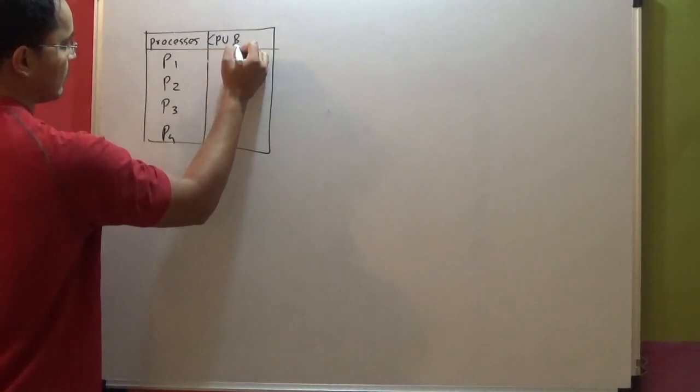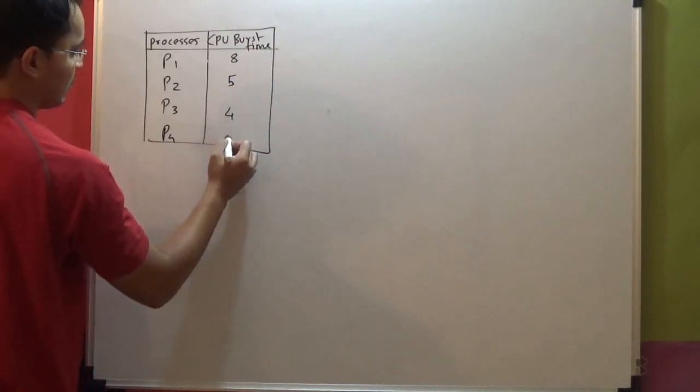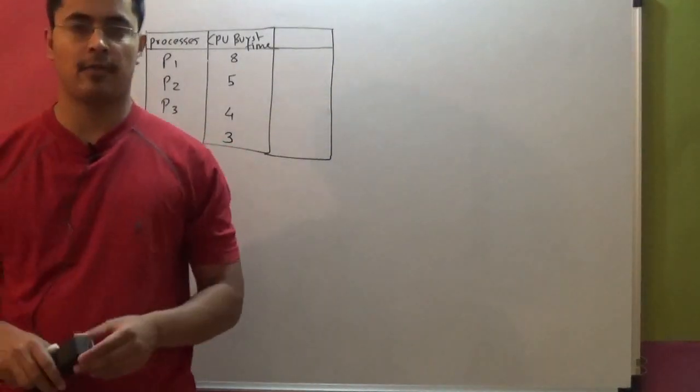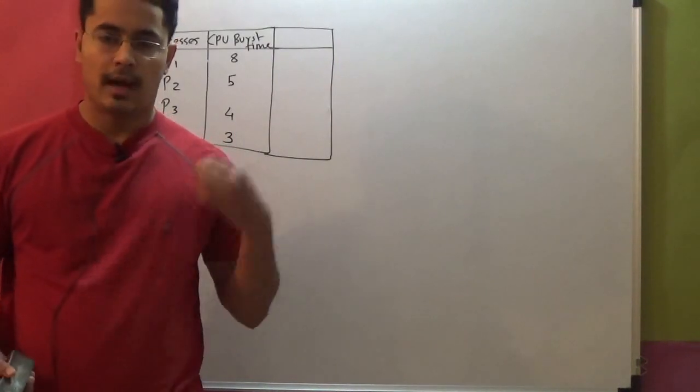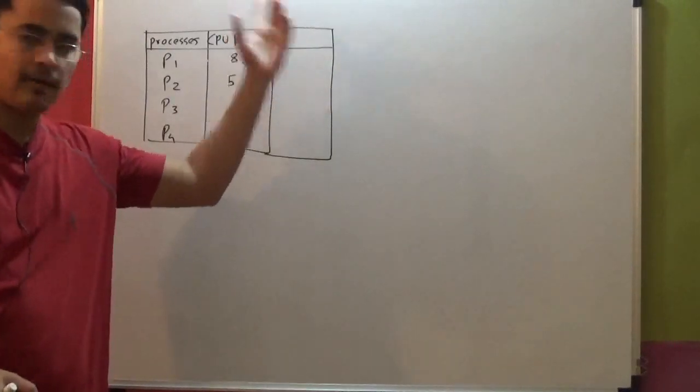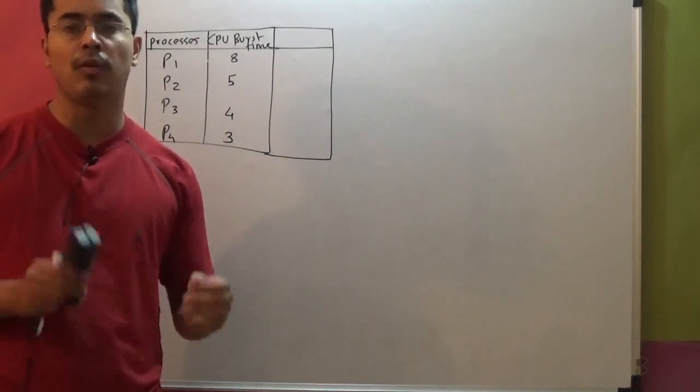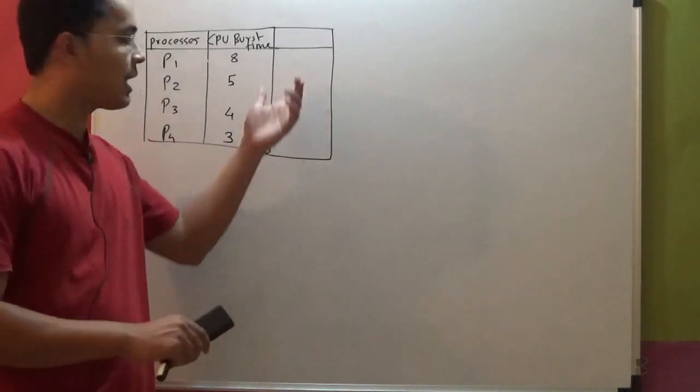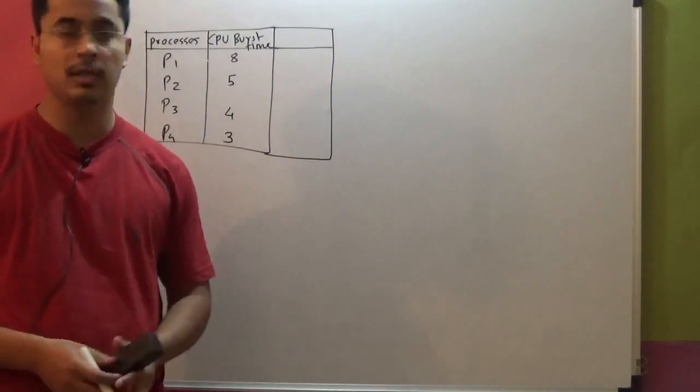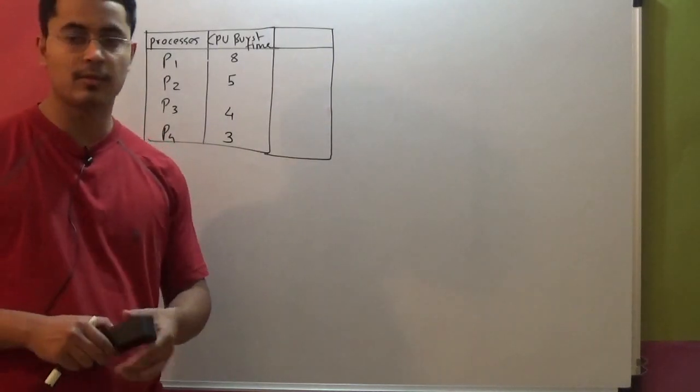CPU burst time: 8, 5, 4, 3. See, in priority scheduling, like SJF, you will have two possibilities, either preemptive or non-preemptive. Whenever you are given the arrival times in the table, that means most probably you will be using preemptive version of the priority scheduling. If the arrival times are not given, that means you will be using non-preemptive version of the priority scheduling. So first let us solve the non-preemptive version, which means you will not have the arrival times.